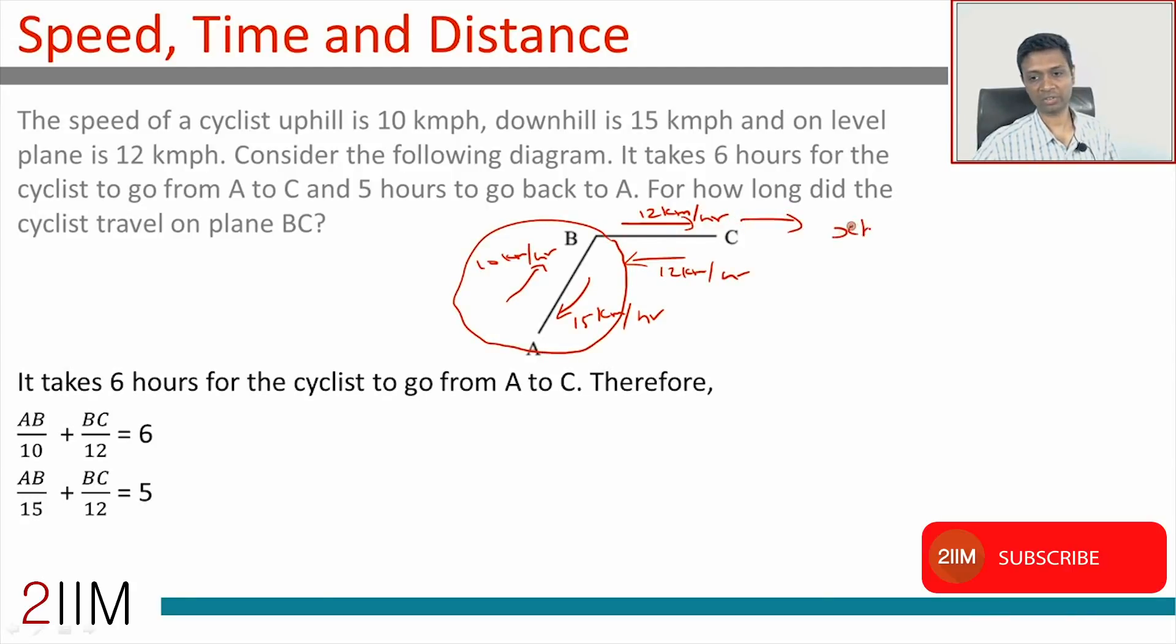I'm going to say time taken here is x hours. The difference here, the ratio of the speeds is 2 is to 3. The ratio of time should also be 2 is to 3. Time taken should be 2k and 3k.